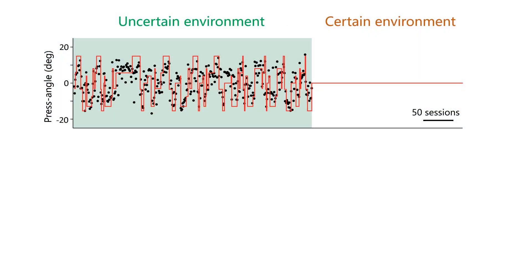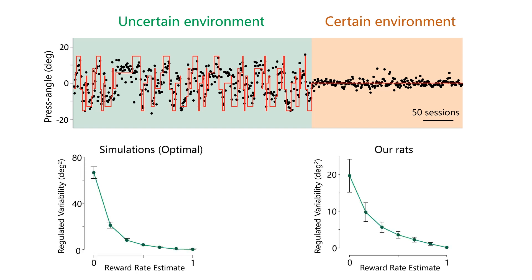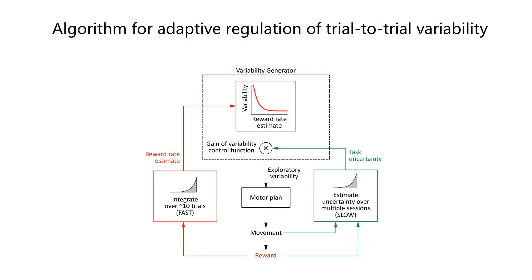So the question is: does the brain take into account the uncertainty of the environment when it regulates variability? To explore this, we maintained the same target angle for our rats for several hundred sessions. Our simulations, much like our intuition, suggested that to be optimal, variability in the certain condition should be regulated less than when things are uncertain. And that's indeed what we saw in our rats. This allows us to conclude that the brain implements a sophisticated algorithm for regulating trial-to-trial variability that optimizes performance and improves learning across a variety of different conditions.